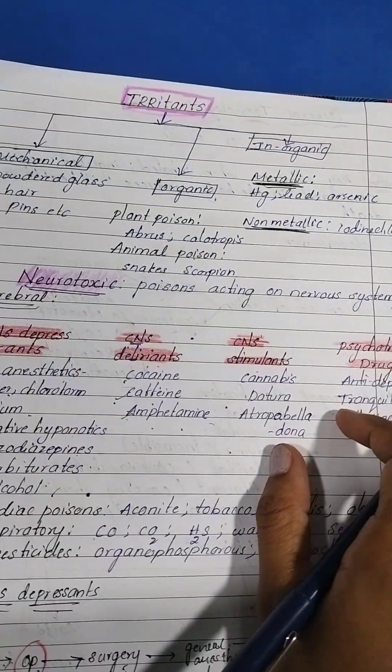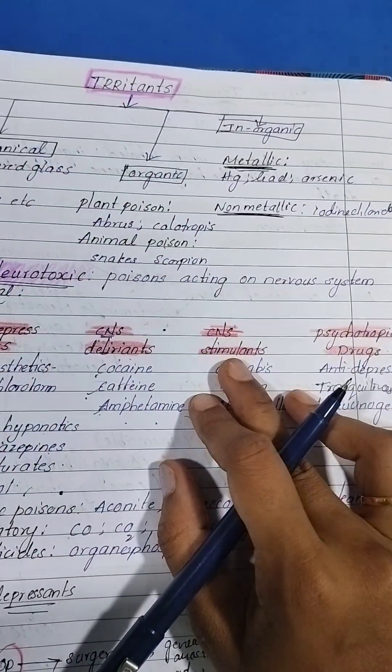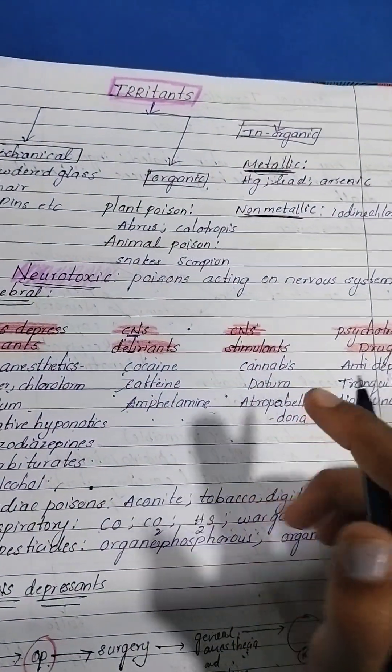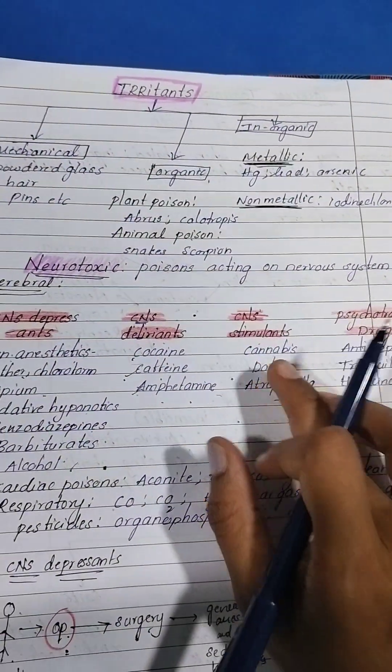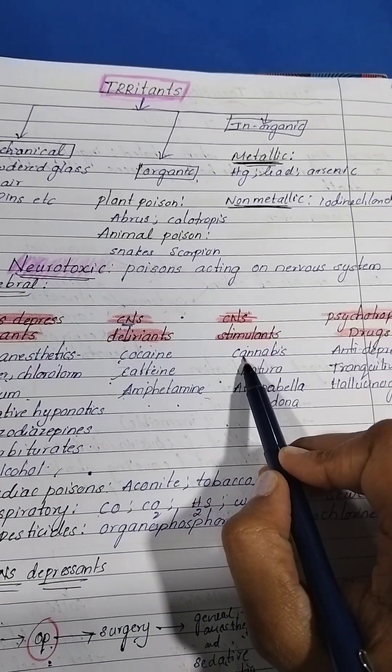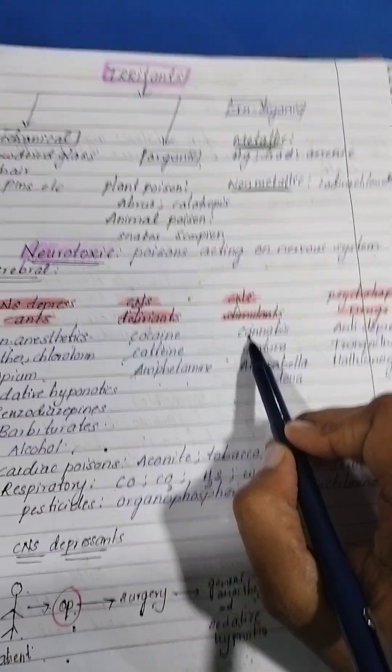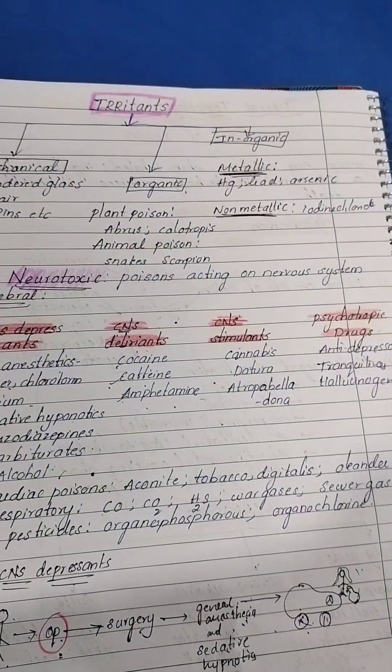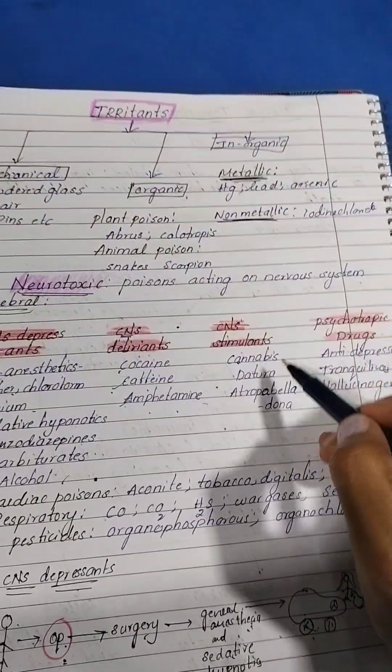Next, CNS stimulants. I'll give a mnemonic for this. There's a person whose name is Kanna and he has a girlfriend and he decided to go for a date.